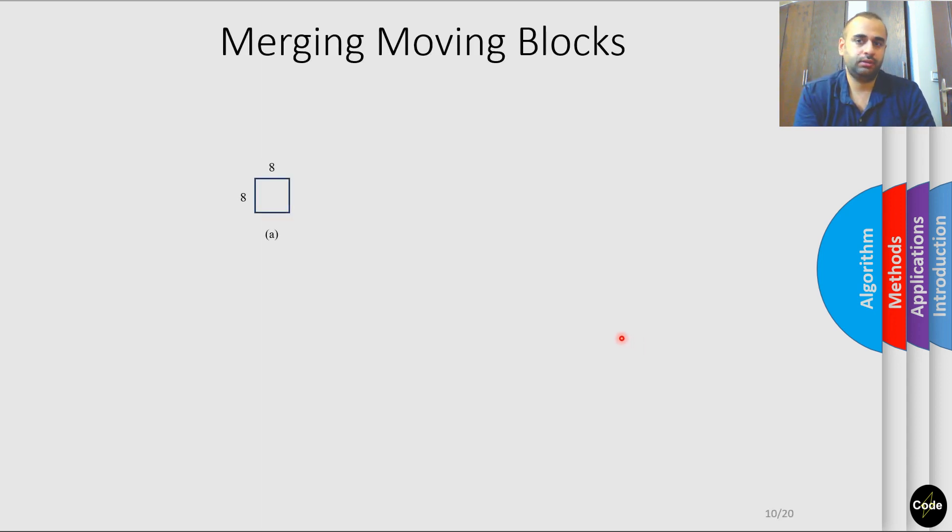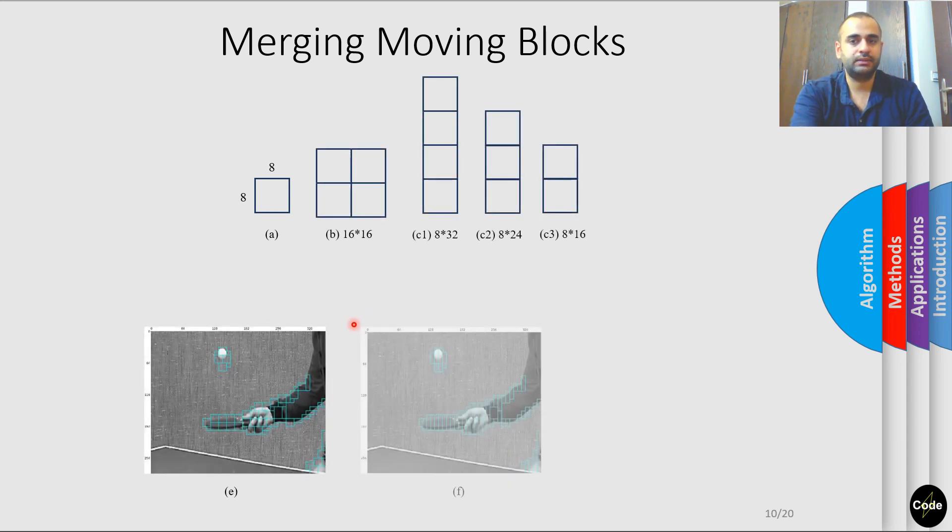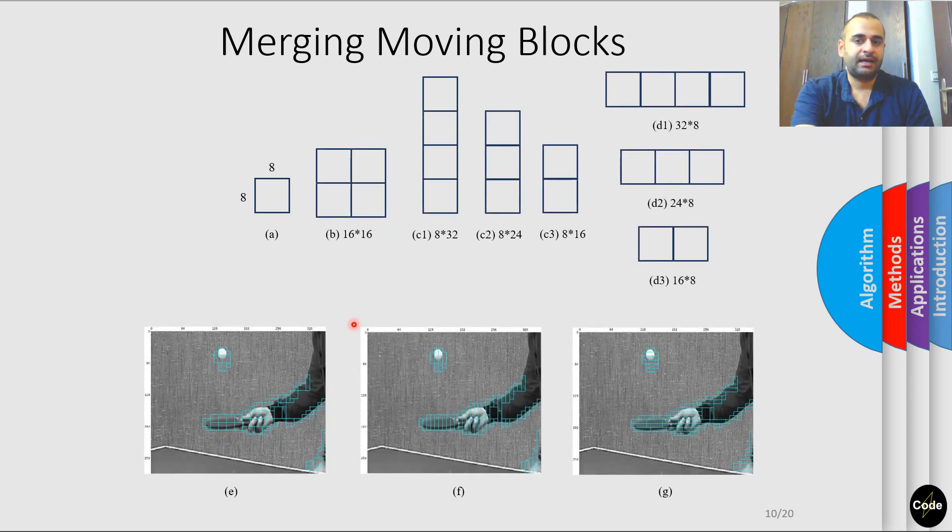After the initial steps, we choose different block shapes for our final blocks. We consider square, vertical, and horizontal shapes. After looking into them, we go with the square shape because it's good at capturing motion in both horizontal and vertical directions. Also, I'll talk about how using deep learning to make our algorithm even more robust.